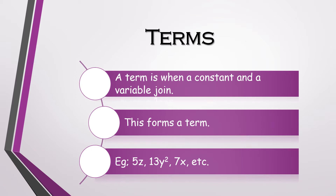Firstly, terms. A term is when a constant and a variable join — this forms a term. Examples are 5z, 13y squared, 7x, etc. Let's take the first example, 5z. In this, 5 is the constant and z is the variable. This means that 5 into z will equal to 5z. There are many more examples like these.